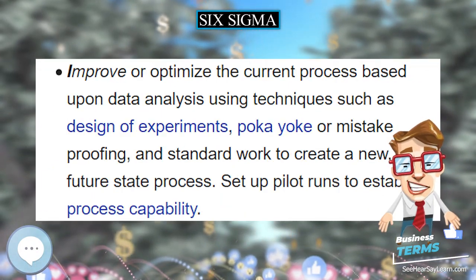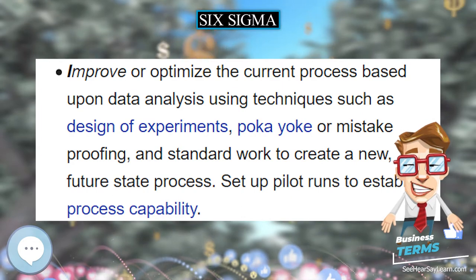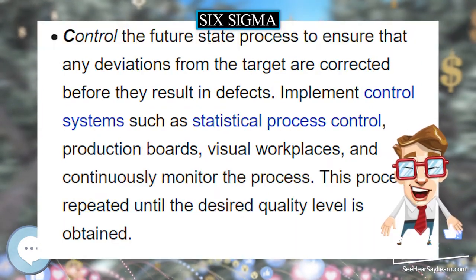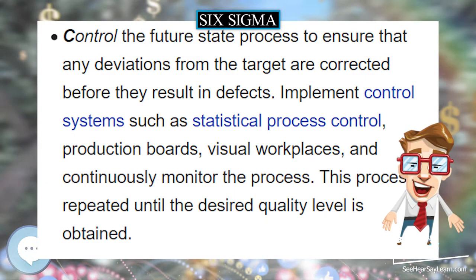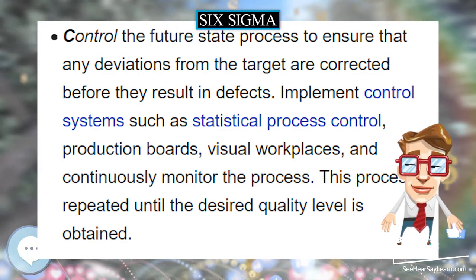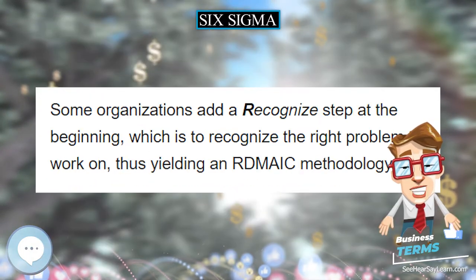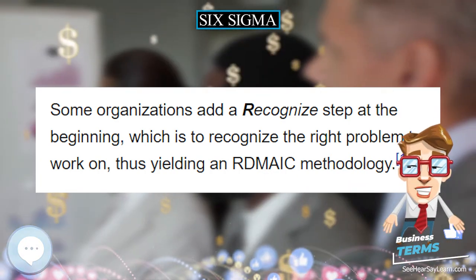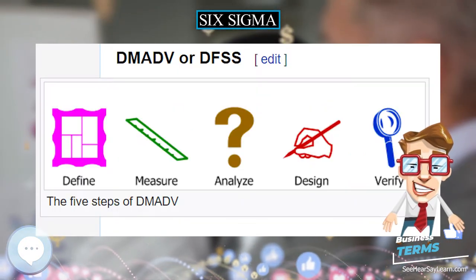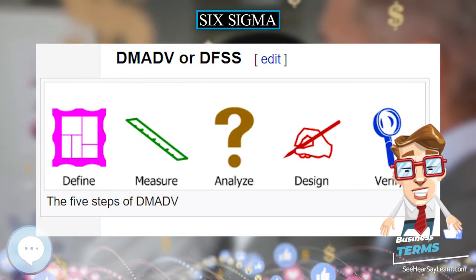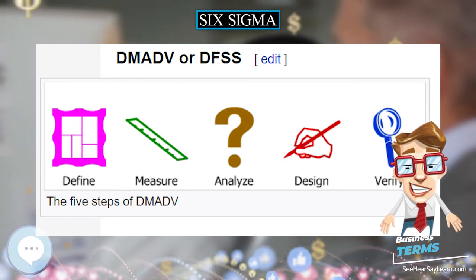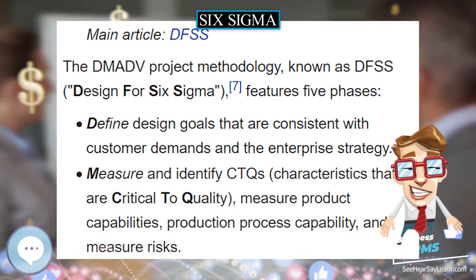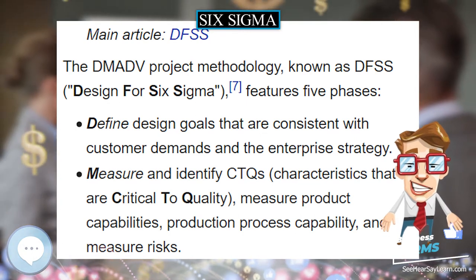There is no standard certification body, and different certification services are offered by various quality associations and other providers against a fee. The American Society for Quality, for example, requires black belt applicants to pass a written exam and to provide a signed affidavit stating that they have completed two projects, or one project combined with three years of practical experience in the body of knowledge.